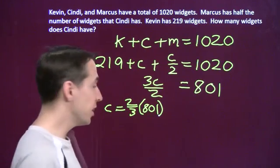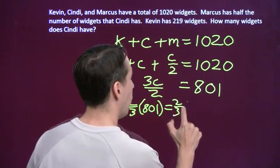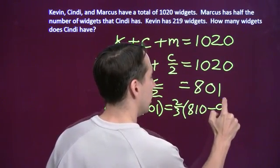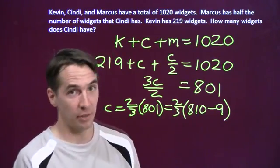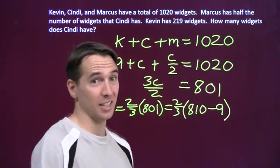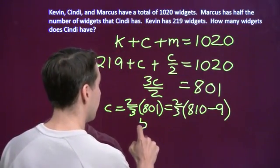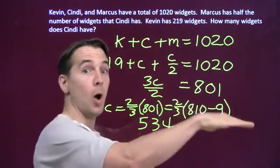Now, a slick way to figure this out, to compute this, is just think of 801 as 810 minus 9. Because it's easy to take 2 thirds of 810, that's 540, and 2 thirds of 9 is 6. So this is just 540 minus 6, that's 534. And we're finished with this problem, on to the next one.